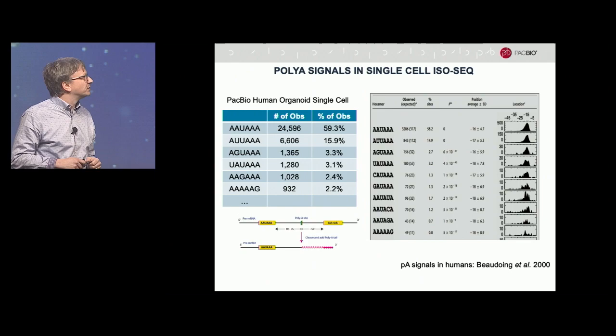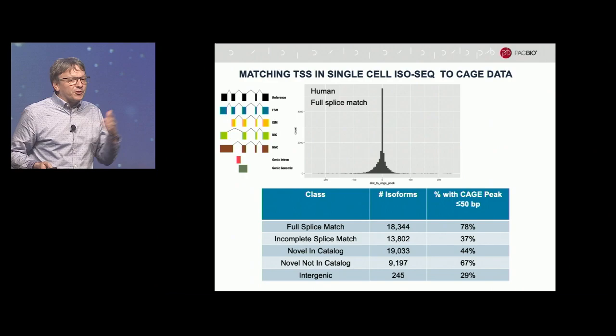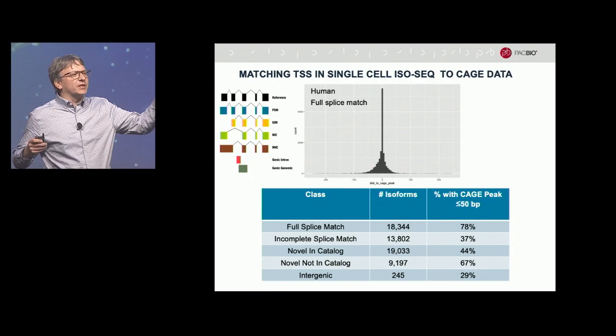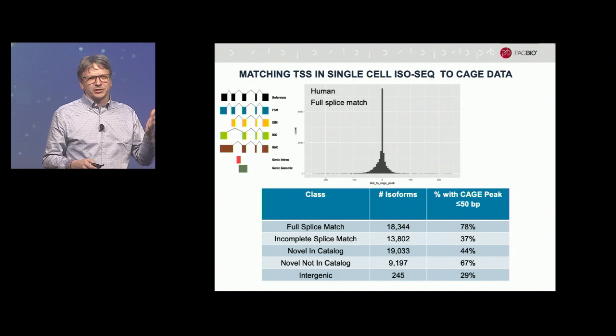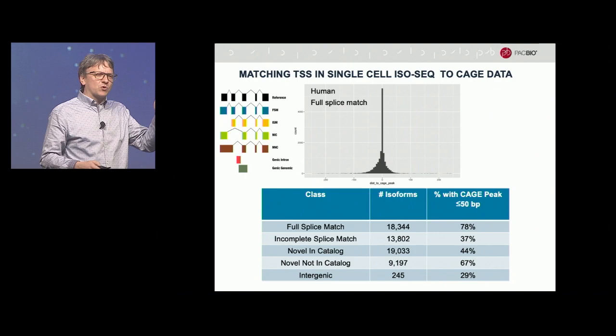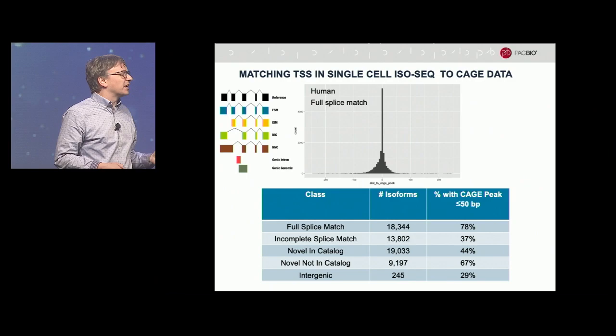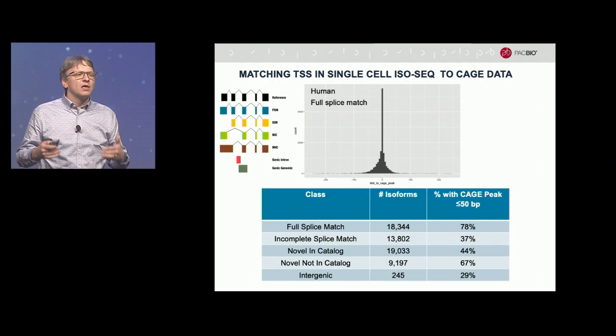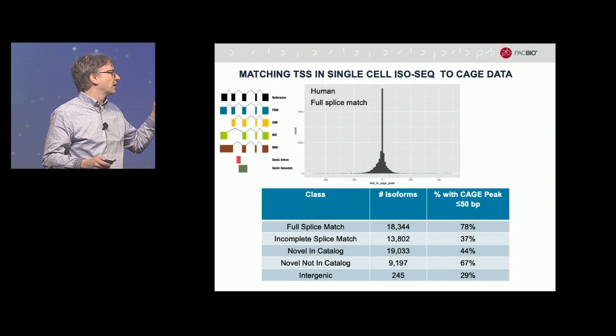On the other end of the molecule, we looked at transcription start sites — did RT successfully reach the 5' end? Of the full splice matches, almost 80% show co-localization in the genome with a CAGE tag, which degrades as you move to other splicing categories. Interestingly, even the novel not-in-catalog class — meaning new splices not seen before — still had those full-length cDNAs firing at a known CAGE tag, suggesting these constitute interesting and genuine isoforms.